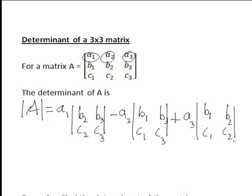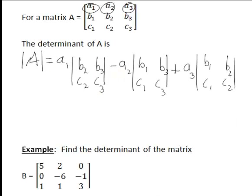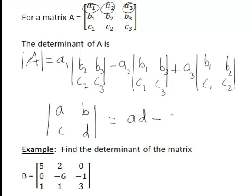So that is the general formula for working out the determinant of a 3 by 3 matrix. Each of these 2 by 2 sub-determinants — for a 2 by 2 matrix ABCD, for instance — equals the diagonal AD multiplied together minus the product of the other diagonal elements BC.